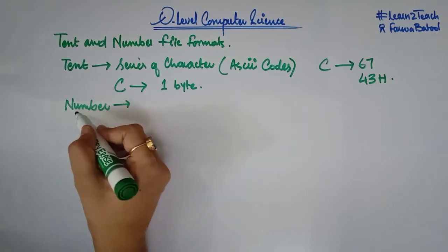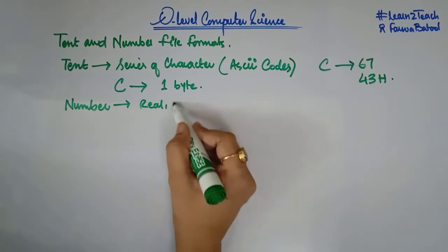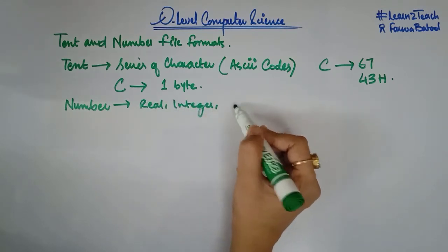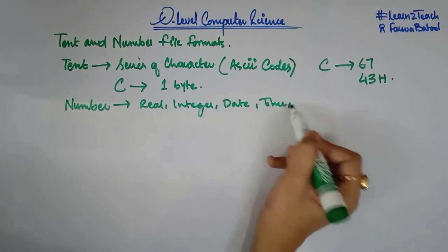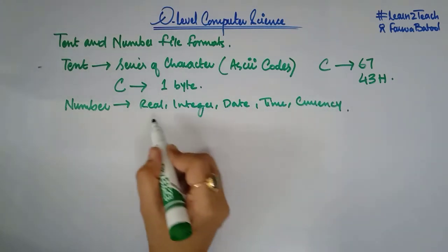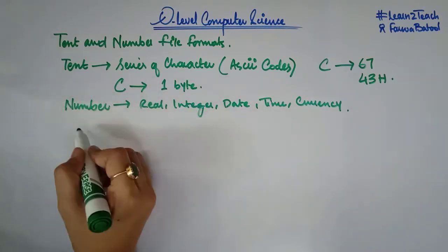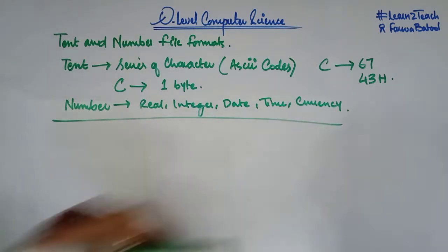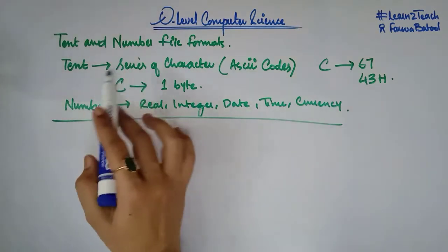There are different formats to store numbers. Numbers can be stored as a real number, as an integer, in the form of date, time, or currency. These are the different formats in which numbers can be stored.